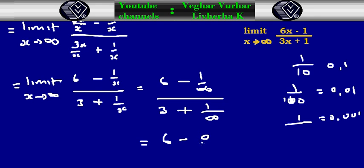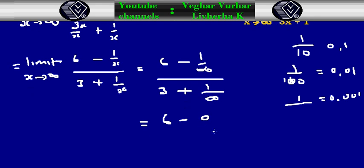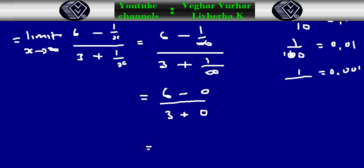You have put infinity where there is X, which approaches 0. From here you'll be left with 6 minus 0 over 3 plus 0, which equals 6 over 3, which equals 2.